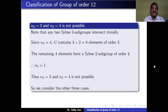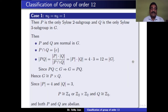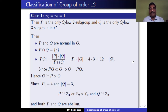We now consider the other three cases. Case 1: N2 = 1 and N3 = 1. This means G has a unique Sylow 2-subgroup P and a unique Sylow 3-subgroup Q. Since they are unique, both P and Q are normal in G.